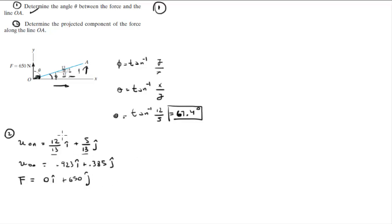So all you got to do to find the projected component of f along OA is to do the dot product of f times the unit vector going along OA. So f is equal to 0.923i plus 0.385j.